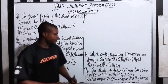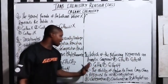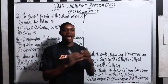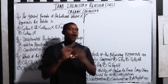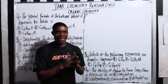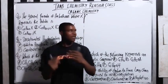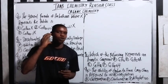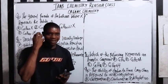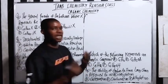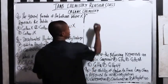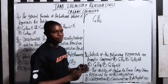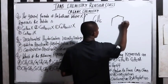Question three: which of the following represents an aromatic compound? Benzene and benzene derivatives are aromatic compounds. When you talk about aromatic compounds in organic chemistry, the first thing that comes to mind is benzene. The general formula for benzene is C6H6.